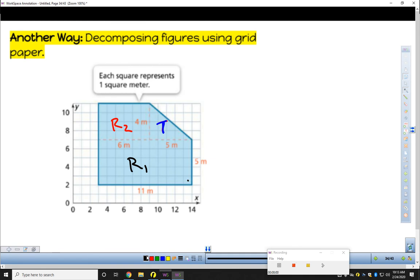Rectangle 1, base of 11, height of 5. Rectangle 1, 55 meters squared. Rectangle 2, base of 6, height of 4, area of 24 meters squared.